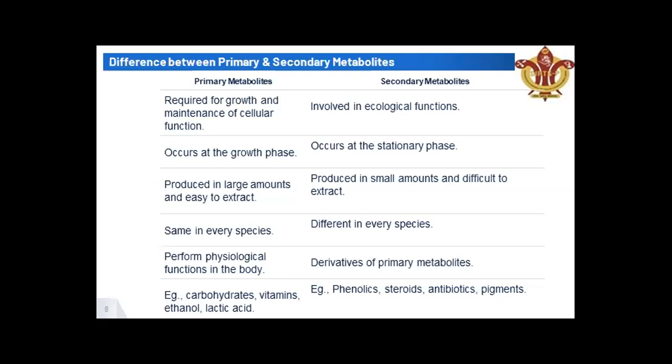Primary metabolites are the same in every species because they are required for growth and development and are produced during the developmental phase. Secondary metabolites differ across species. Primary metabolites perform physiological functions in the body, whereas secondary metabolites are derived from primary metabolites. Examples of secondary metabolites include phenolics, flavonoids, terpenoids, steroids, and pigments.